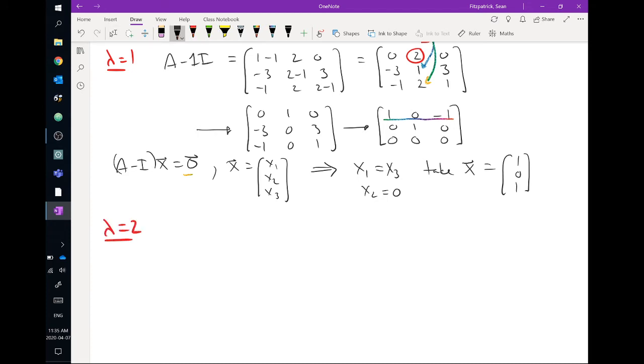Now we'll do the second. Lambda equals 2. So I do A minus 2 times the identity. So this time, I have 1 minus 2, 2, 0, minus 3, 2 minus 2, 3, minus 1, 2, 2 minus 2, subtracting 2 down the diagonal. So I get minus 1, 2, 0, minus 3, 0, 3, minus 1, 2, 0. Okay.